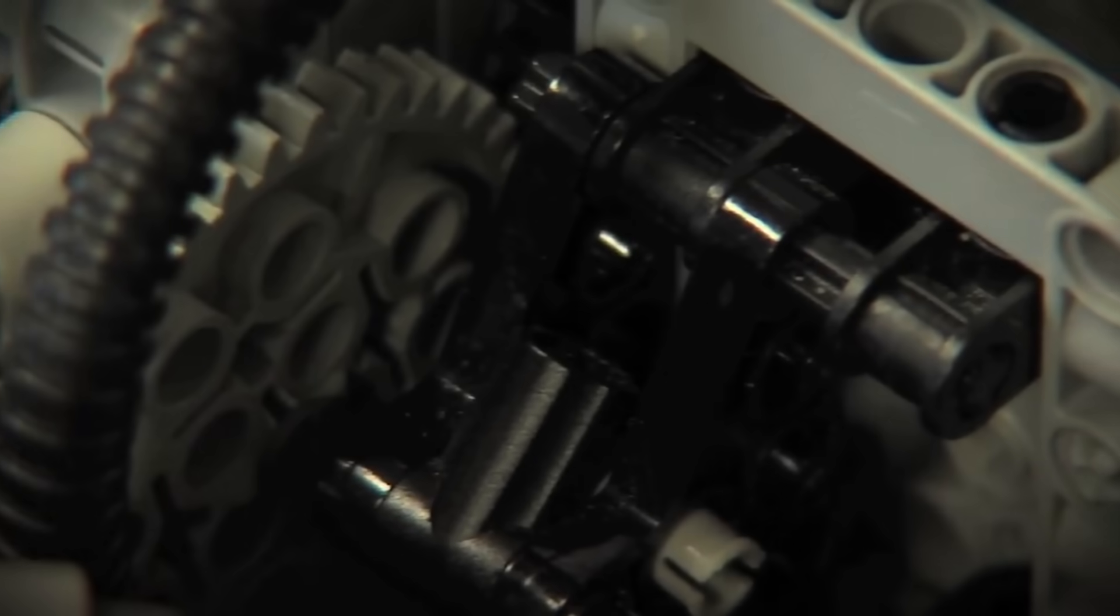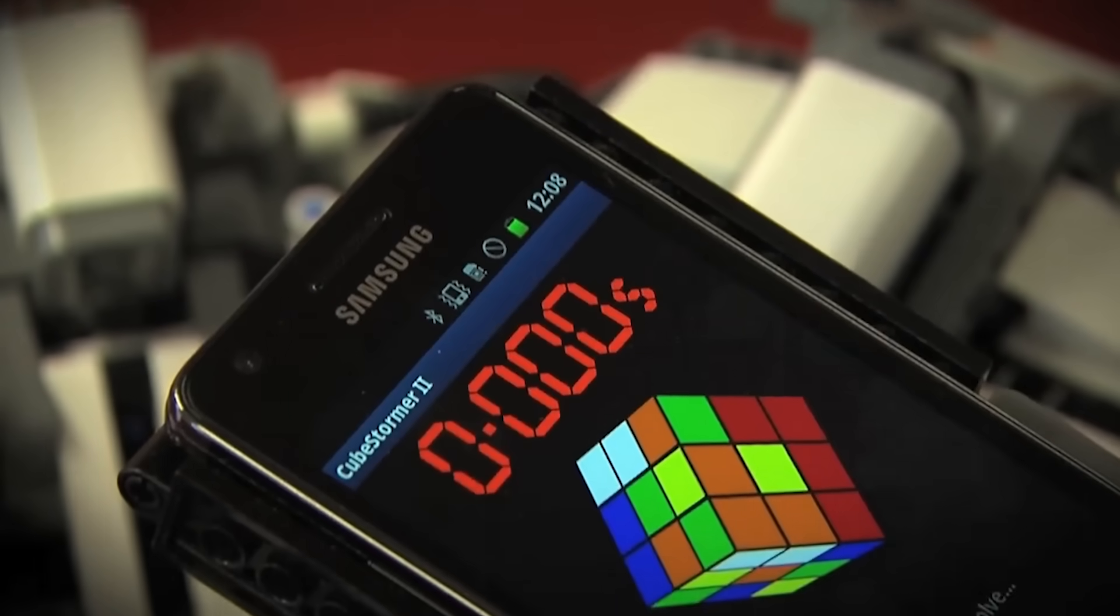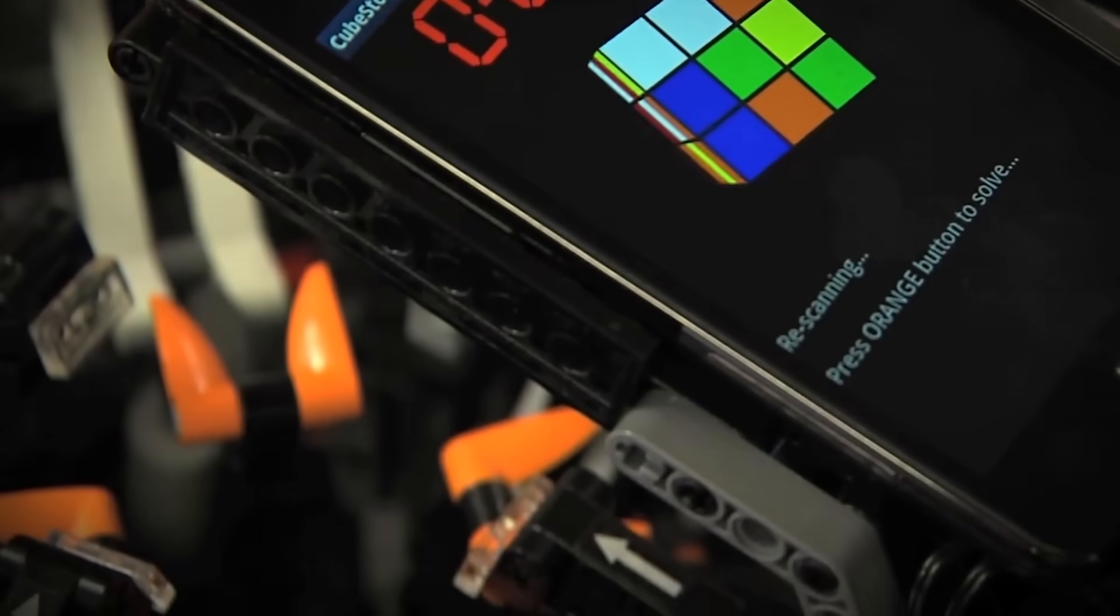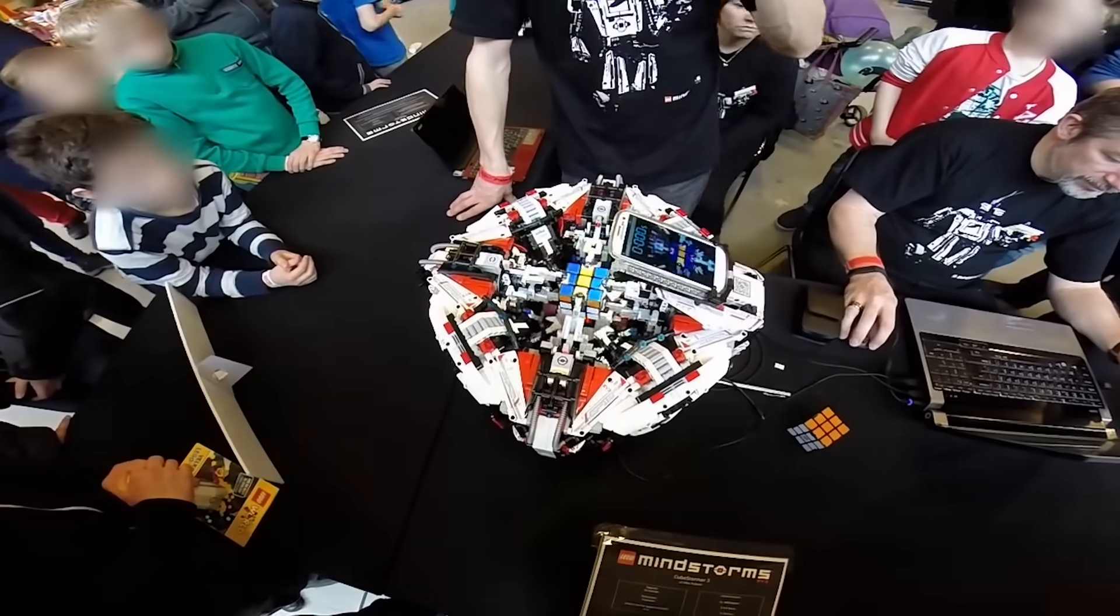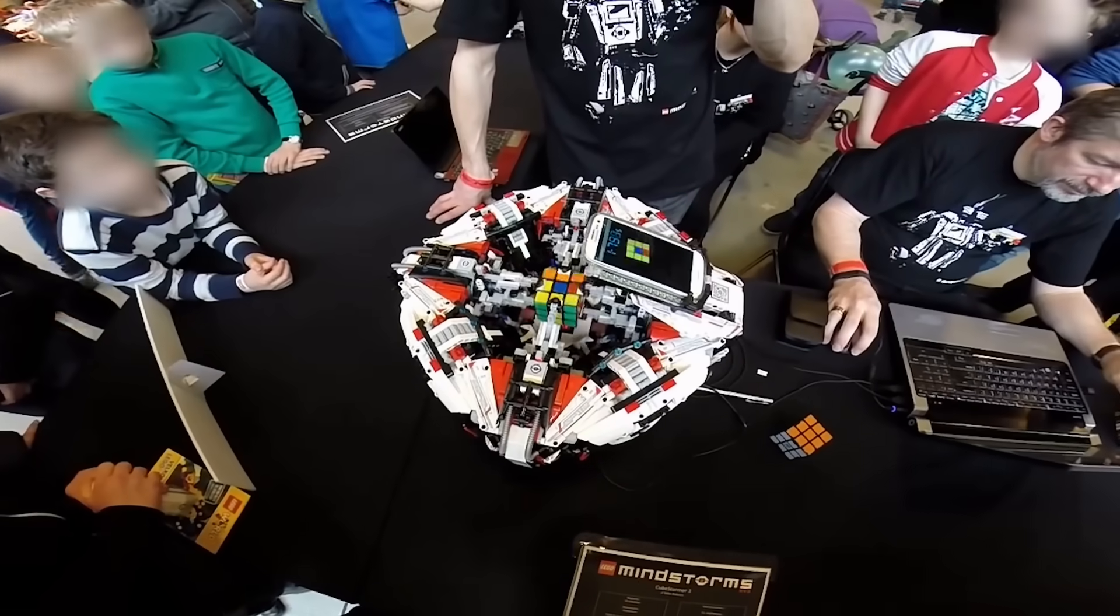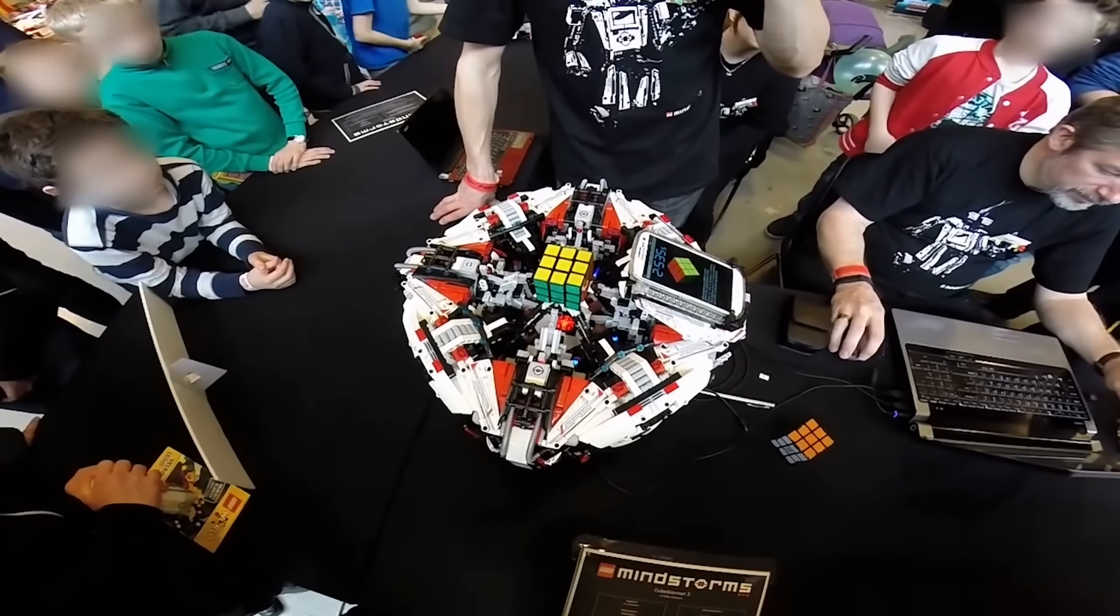The custom app developed for the smartphone uses the phone's camera to capture images of each face of the Rubik's Cube, which processes to determine the scrambled colors. To solve the cube, the app uses an advanced Kosiemba's two-phase algorithm.